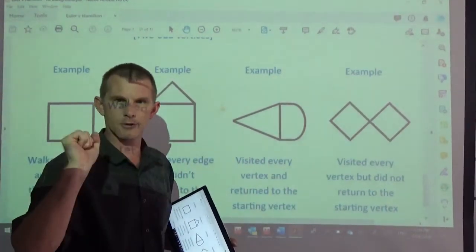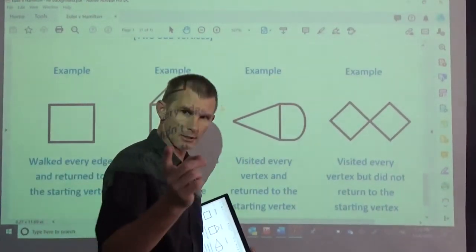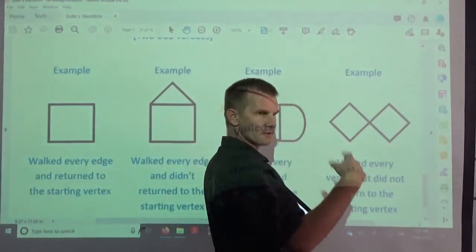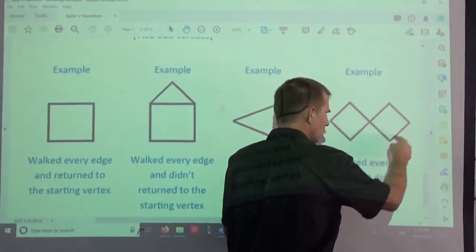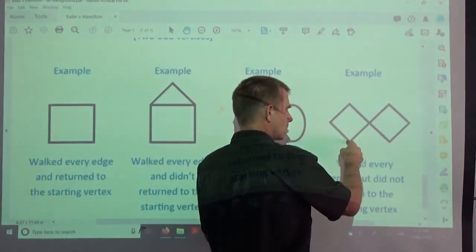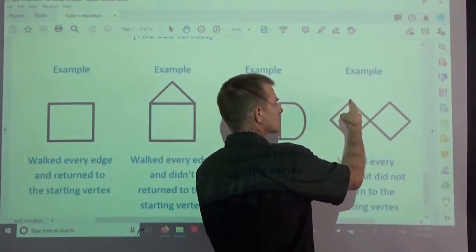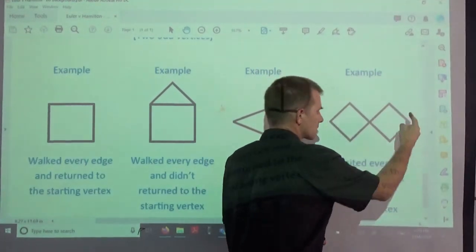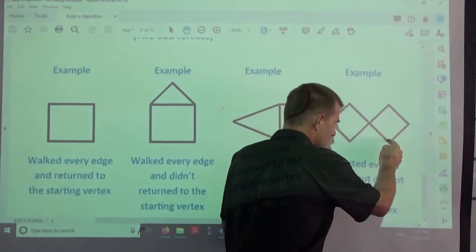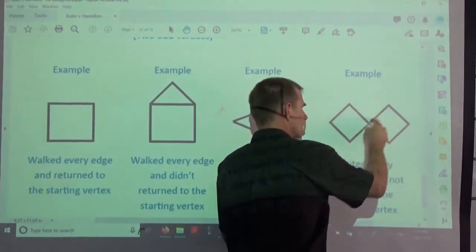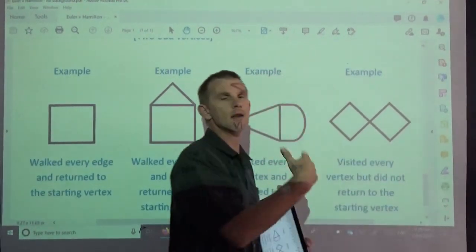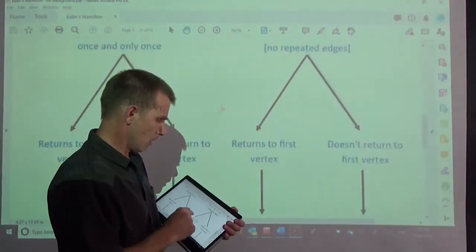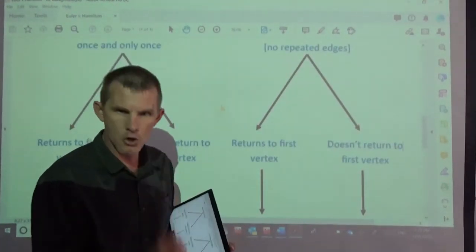Now those of you ahead might go, well hang on, you finished up there, couldn't you have started there? I could. I could have gone. And in a similar way I could have started here and gone, or I could have started here and gone. So there's a number of different ways you can achieve that one by going to every vertex but not returning to the starting vertex.